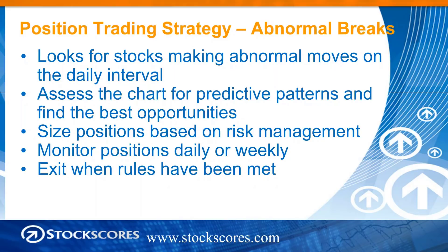With this particular position trading strategy — abnormal breaks — I'm looking for abnormal activity from predictive patterns. There are six components of a predictive pattern: support, resistance, optimism, pessimism, price volatility, and abnormal activity. If you can understand those six things, you can evaluate any chart in 10 seconds. It maybe takes a month of practicing until you get to the point where you can look at any chart and evaluate it quickly. Once you find a valid opportunity, you size your positions based on the risk management formulas, and then you just monitor those positions either daily or weekly.